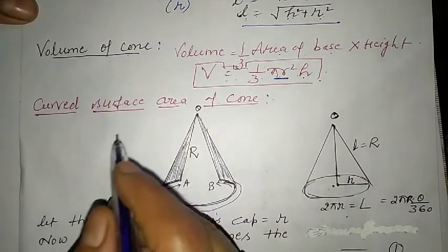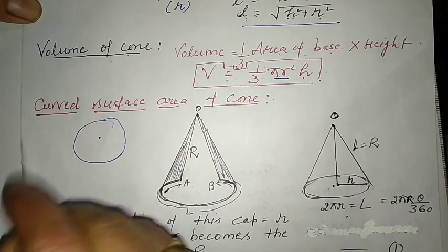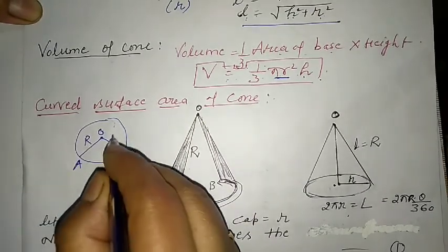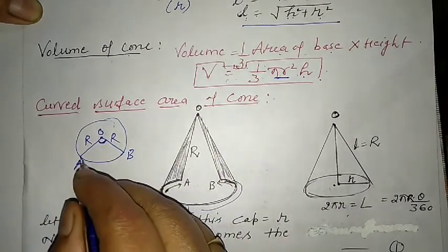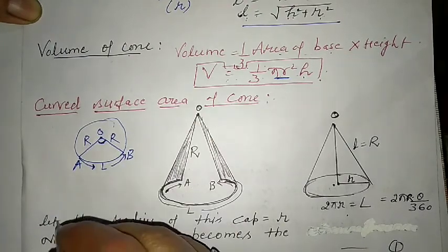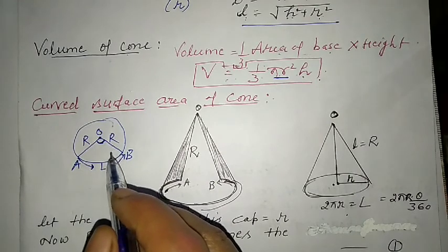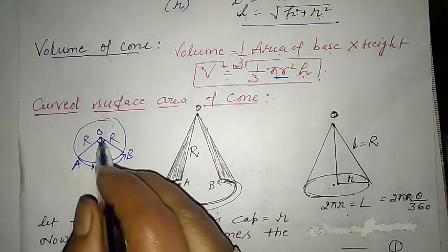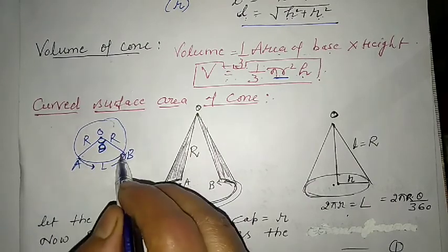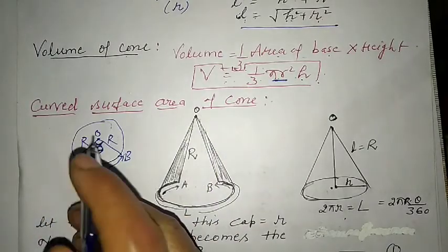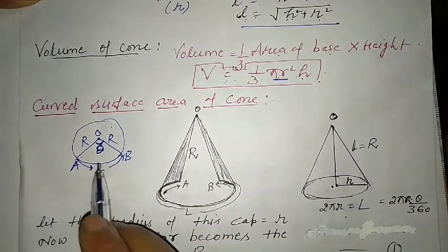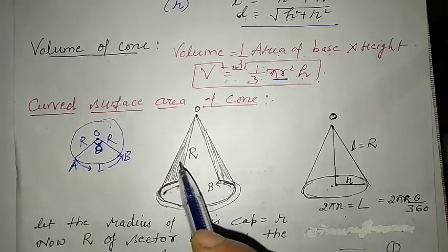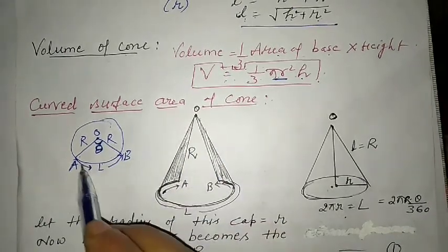To derive the curved surface area, consider a circle with center O. We cut a sector from this circle - suppose the arc endpoints are A and B, the radius of the sector is R, and the central angle is θ. The arc length is denoted l. When we join the two radii of this sector together, a conical cap is formed, just like in the figure shown.